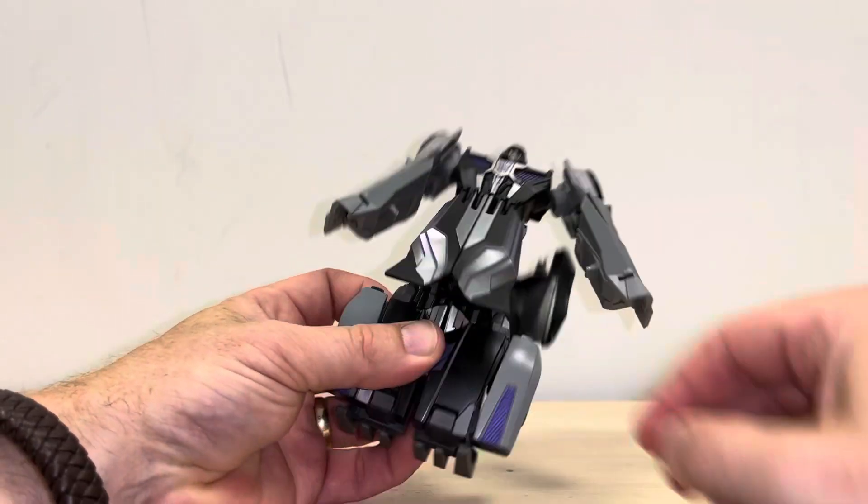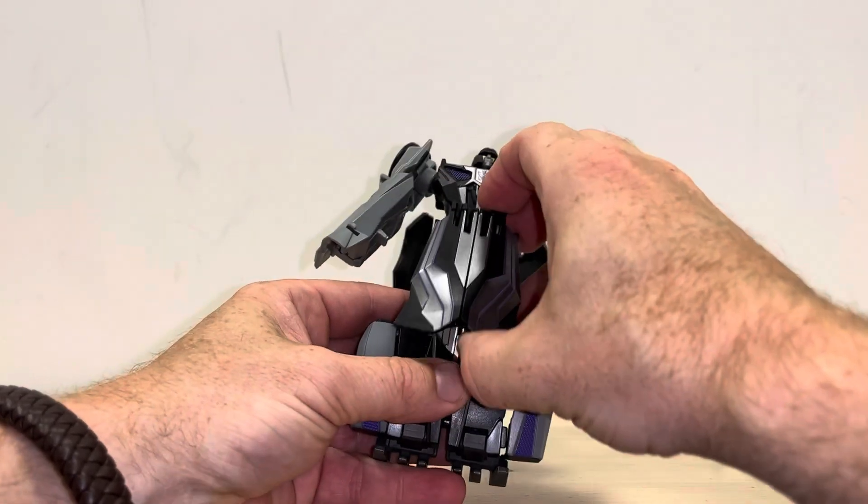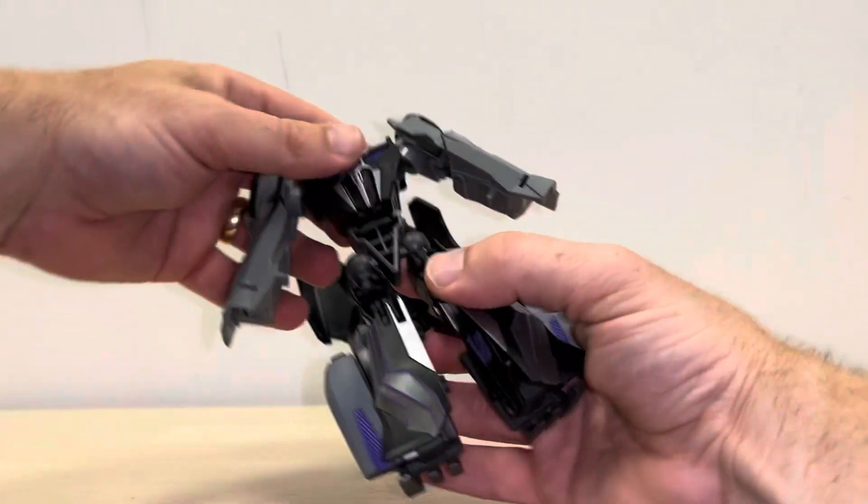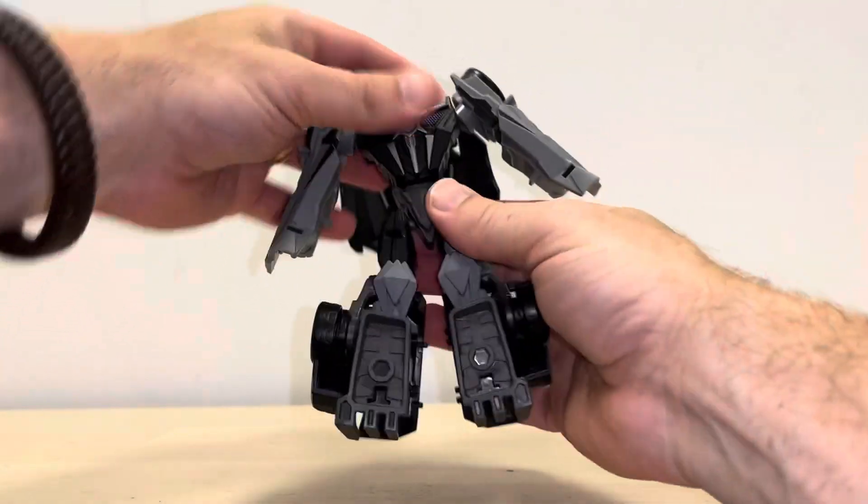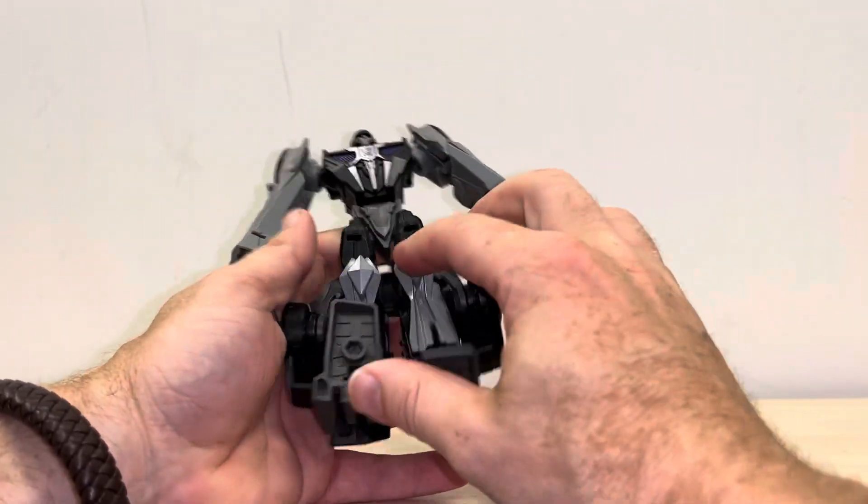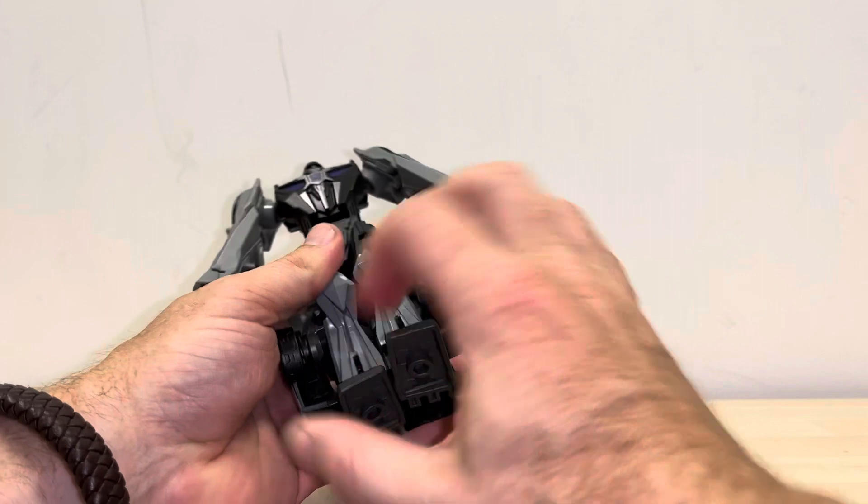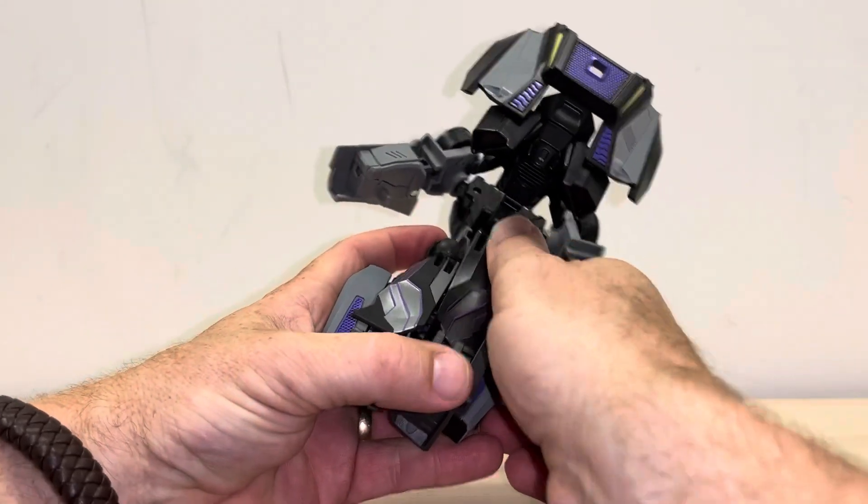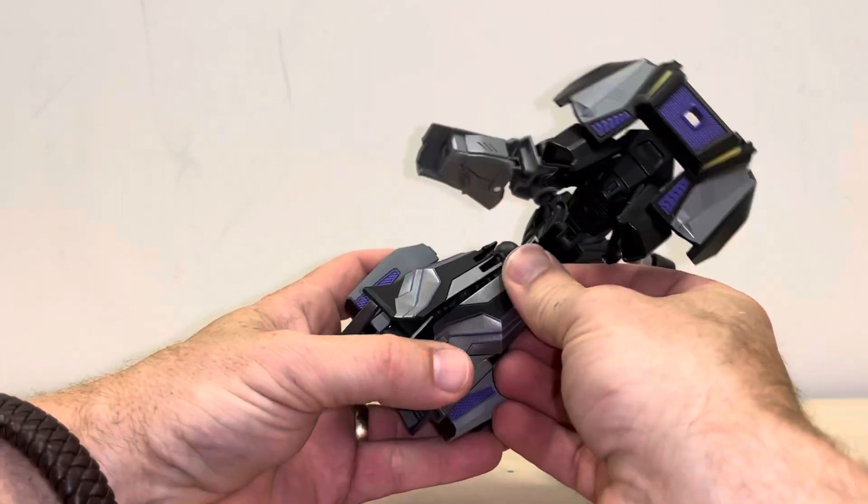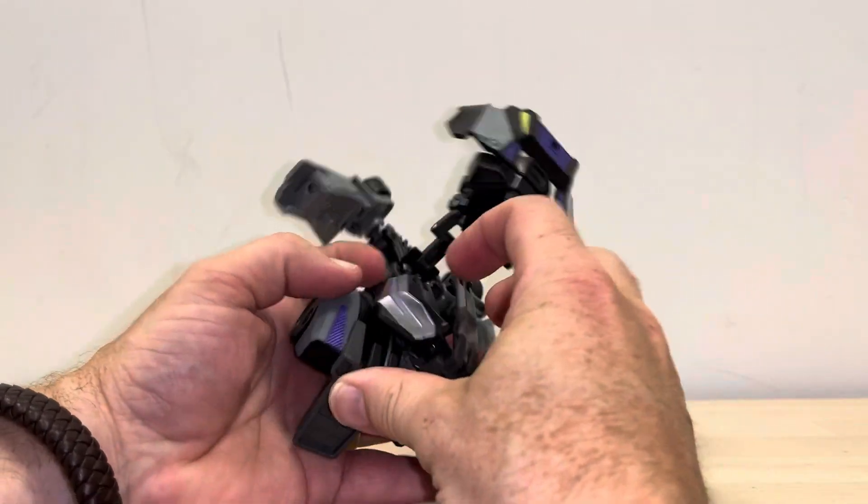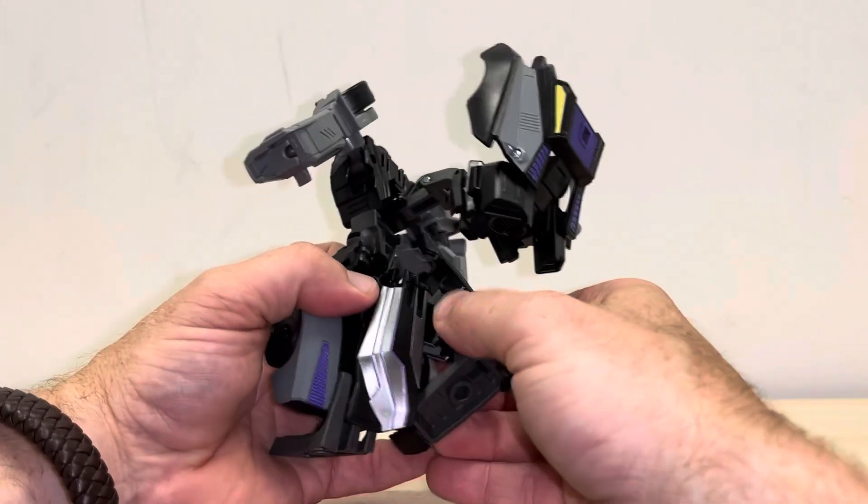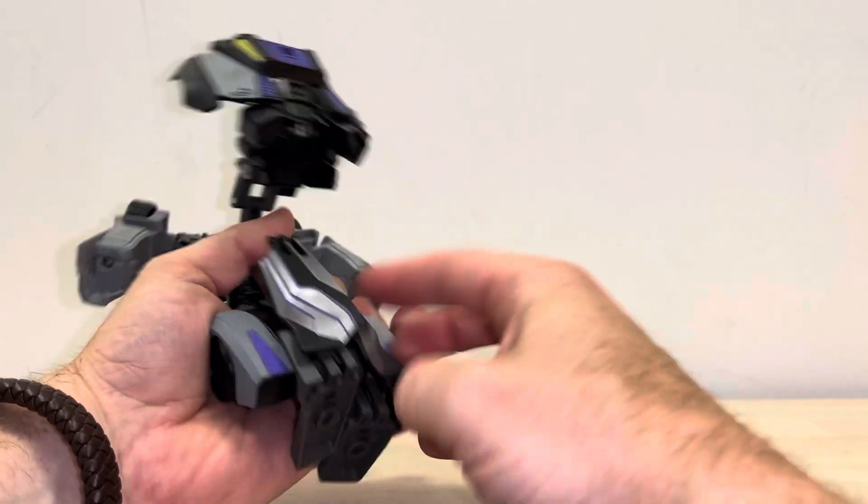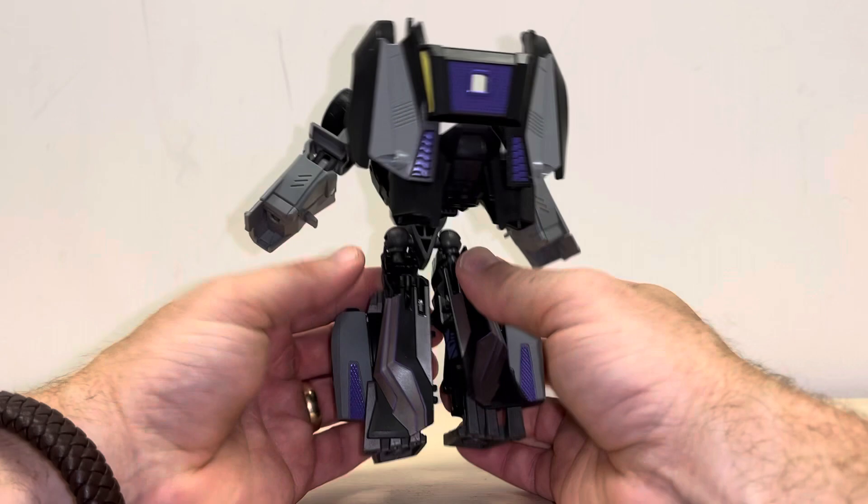Separate what are going to be the back of the leg guards. Separate them, fold them down. Rotate at the waist 180 degrees. Fold the feet down like so. Then you can bring these back parts down. These will go over the top of it. There we go, that's better. I made that look more difficult than what it was.